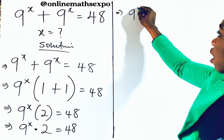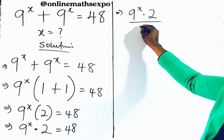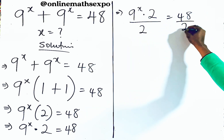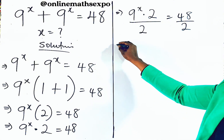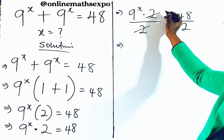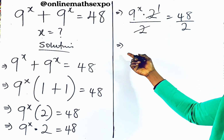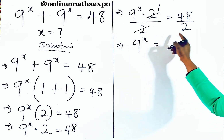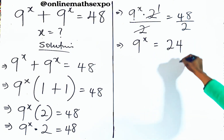So we have 9 to the power of x multiplied by 2, divided by 2, is equal to 48 divided by 2. The 2s cancel out, leaving 9 to the power of x, and 48 divided by 2 gives you 24.